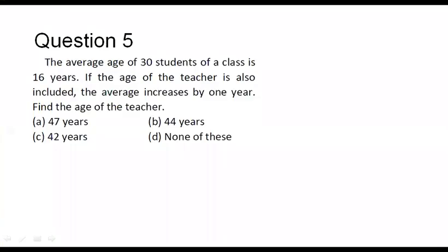In this question it is given that the average age of 30 students in a class is 16 years. So what is the total age of all these 30 students? That corresponds to 16 into 30.